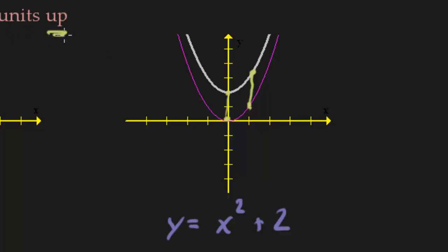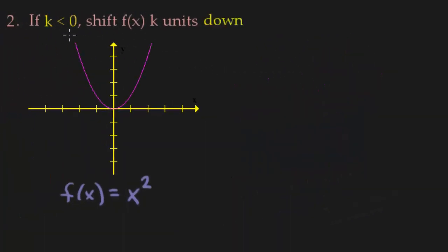When I go up, let's go ahead and shift down. Now if k is less than 0, we're going to shift our basic function k units down. So that would look something like this. Let's take f, let's do like this. y equals x squared minus, and I guess we could do minus 3.